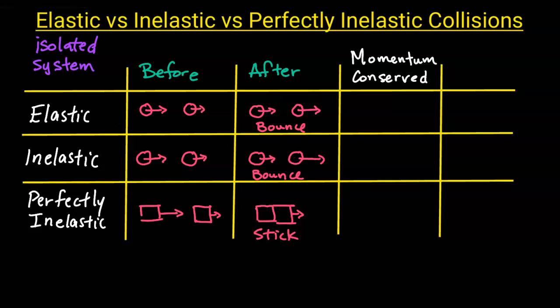In an elastic collision, the momentum is conserved. In an inelastic collision, the momentum is also conserved. And in a perfectly inelastic collision, momentum is also conserved. The key thing here is that the system needs to be an isolated system, which means there are no external net forces. As long as that condition is met, the total momentum before the collision is equal to the total momentum after the collision.